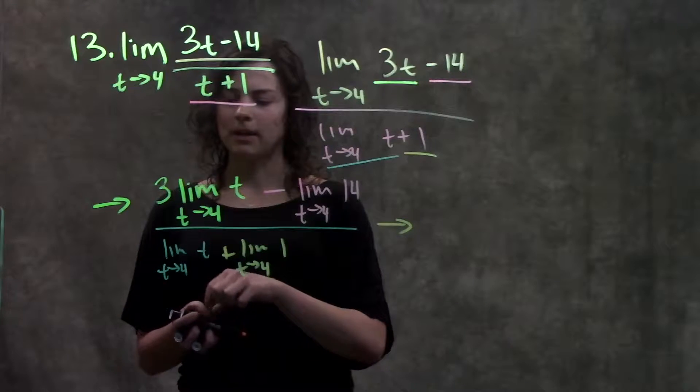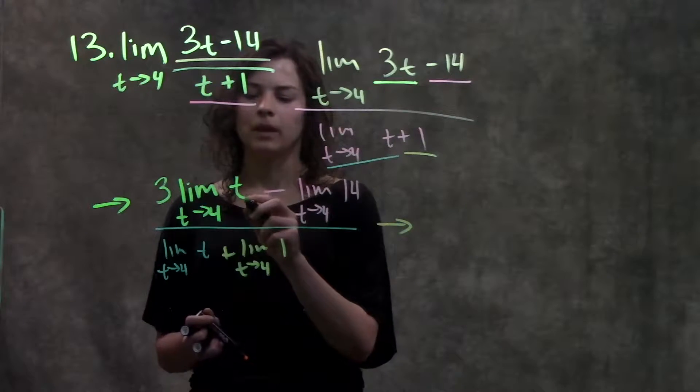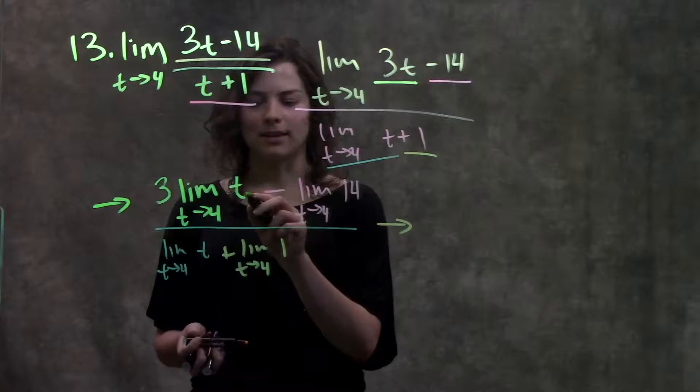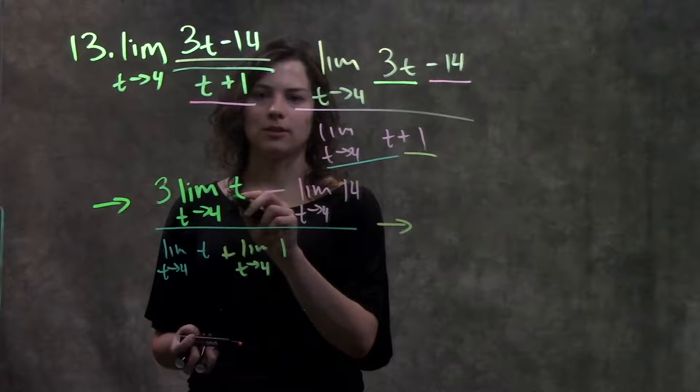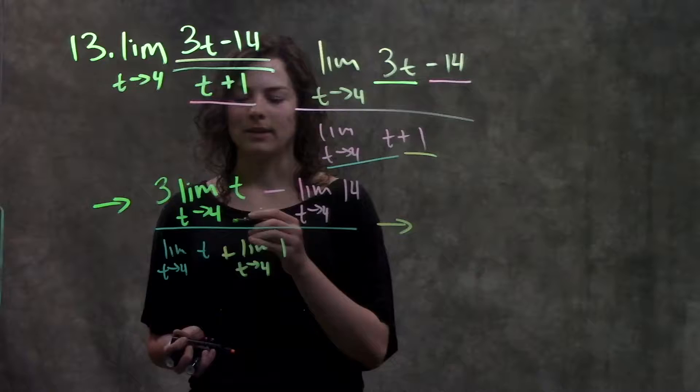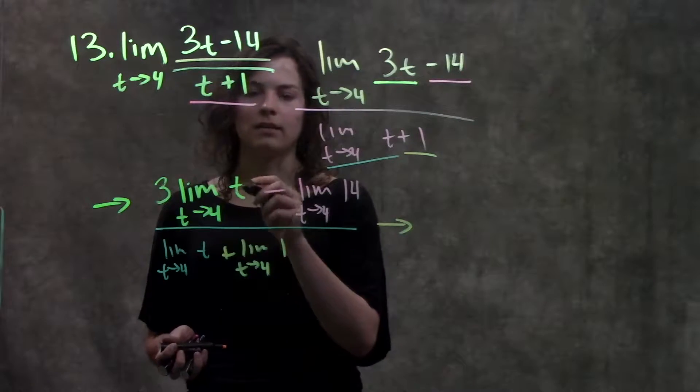All right, looking at this first part here, limit as t approaches 4 of t. Whenever I just have a variable here like this, I can plug in my value of interest into t, and that's what I get. So when I plug in 4 for t, I get 4.